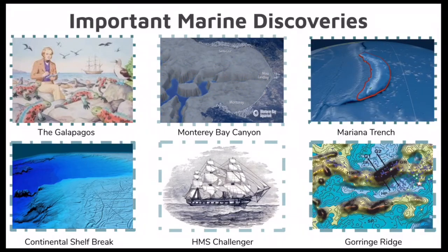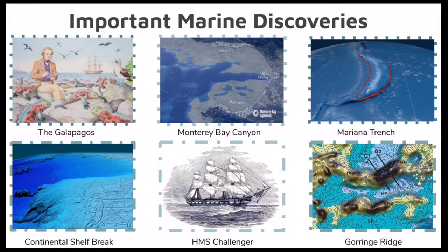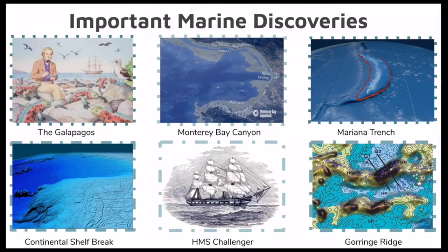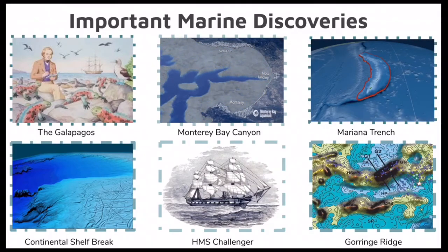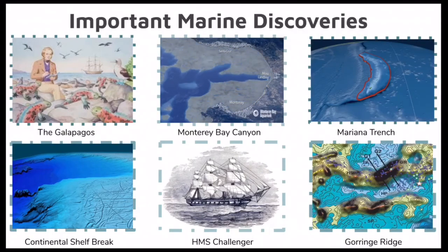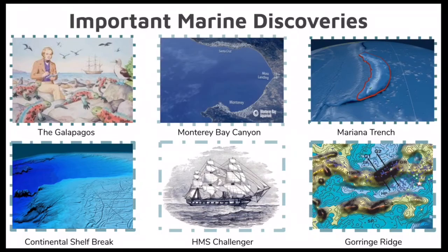In 1849, the continental slope and shelf break were discovered by Coast Survey soundings, and in 1853, another Coast Survey sounding discovered life as deep as 6,000 feet below sea level. Four years later in 1857, Captain James Alden discovered a deep gulch on the coast of Monterey Bay, which ended up being the first known deep sea canyon, reaching almost 12,000 feet below sea level and extending almost 100 miles into the Pacific.